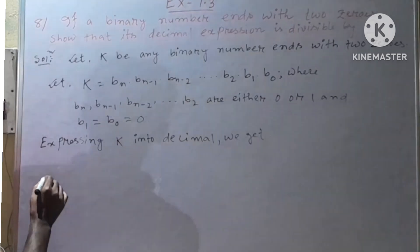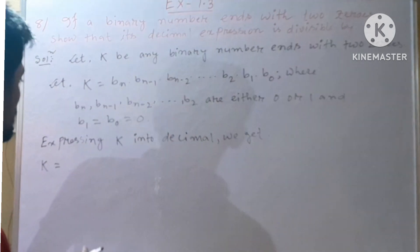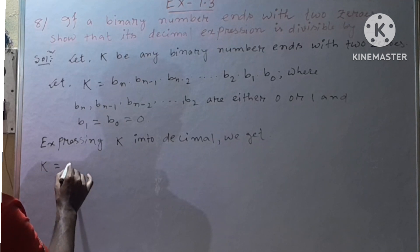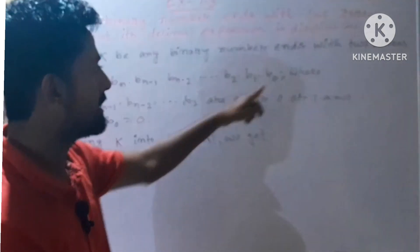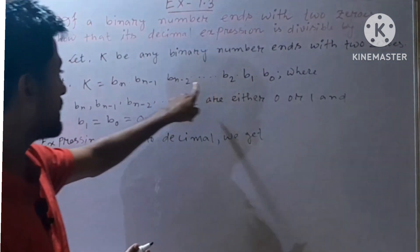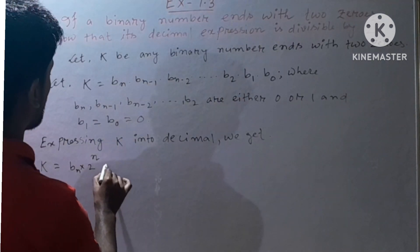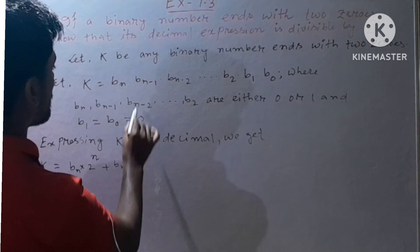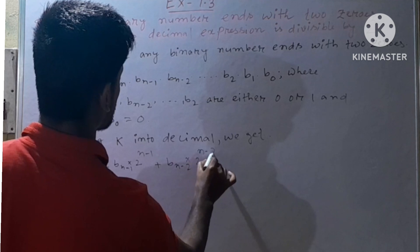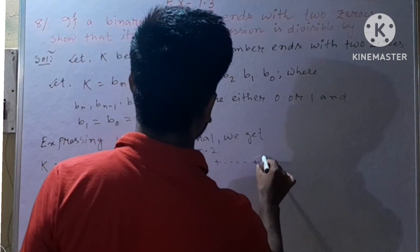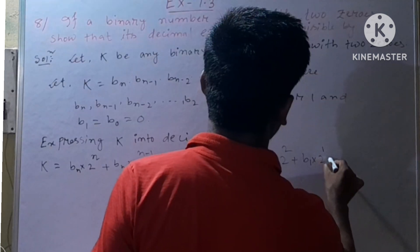The binary number has base 2, so we express the number in decimal. This gives: b_n × 2^n + b_{n-1} × 2^{n-1} + b_{n-2} × 2^{n-2} + dot dot dot + b_2 × 2^2 + b_1 × 2^1 + b_0.